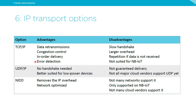With UDP, you can always retransmit instead of acknowledging if you wish. There is also Non-IP Data Delivery (NIDD), which removes the IP overhead and is very network-optimized — even less power consumption than UDP. However, it's currently only supported on narrowband IoT and not many cloud vendors support it. But it's one to start looking at for the future.